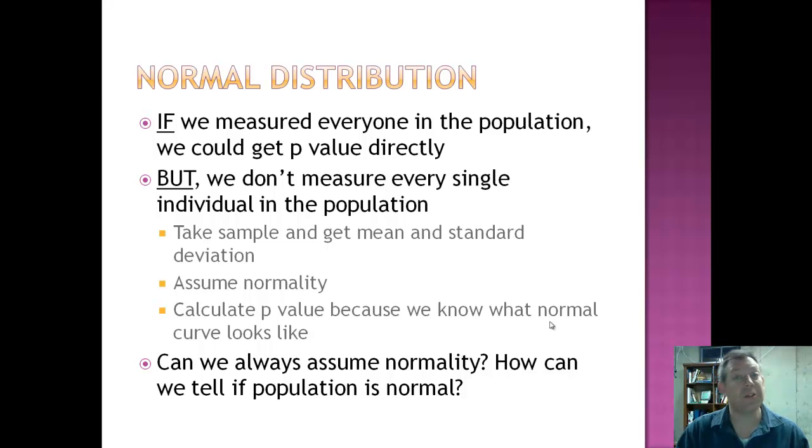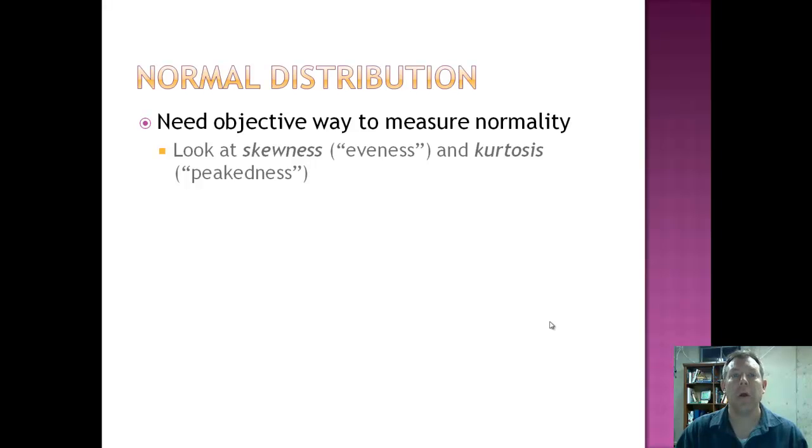Now, you notice that I say that we assume normality. Can we always assume normality? We looked last week and we saw that most of the data that we work with looks very non-normal, or not as pretty as some of these normal graphs. And if we can't assume it, we'd like to test for it. Well, how can we tell? How can we tell if a population is normal?